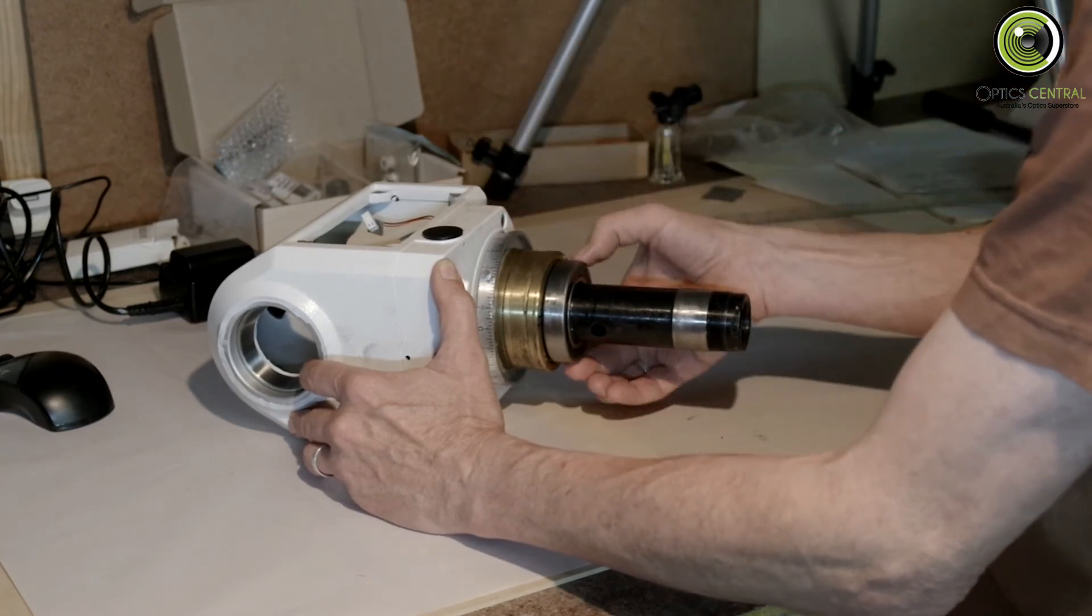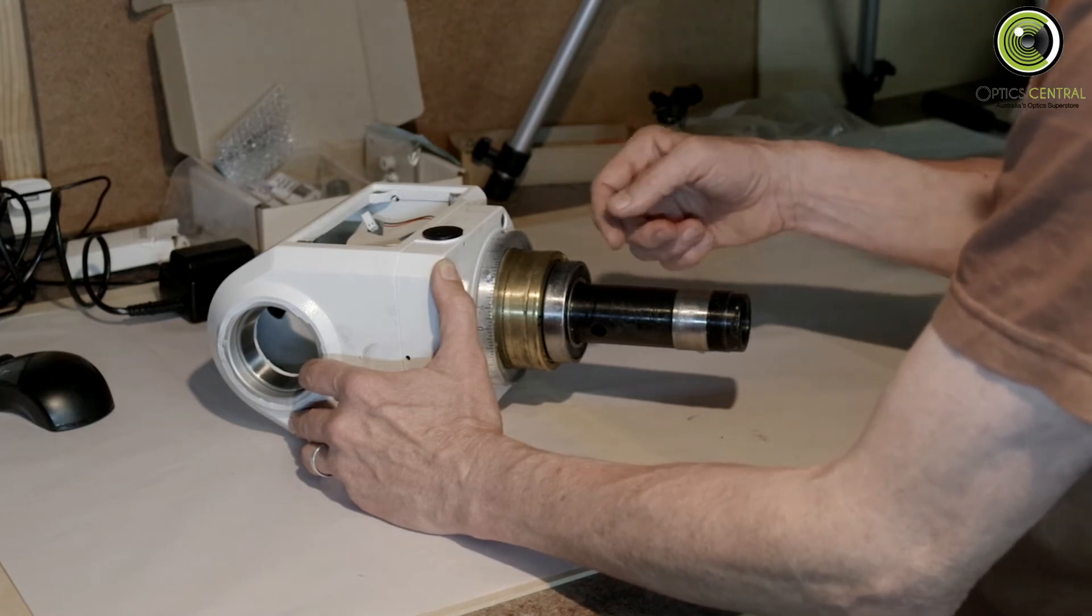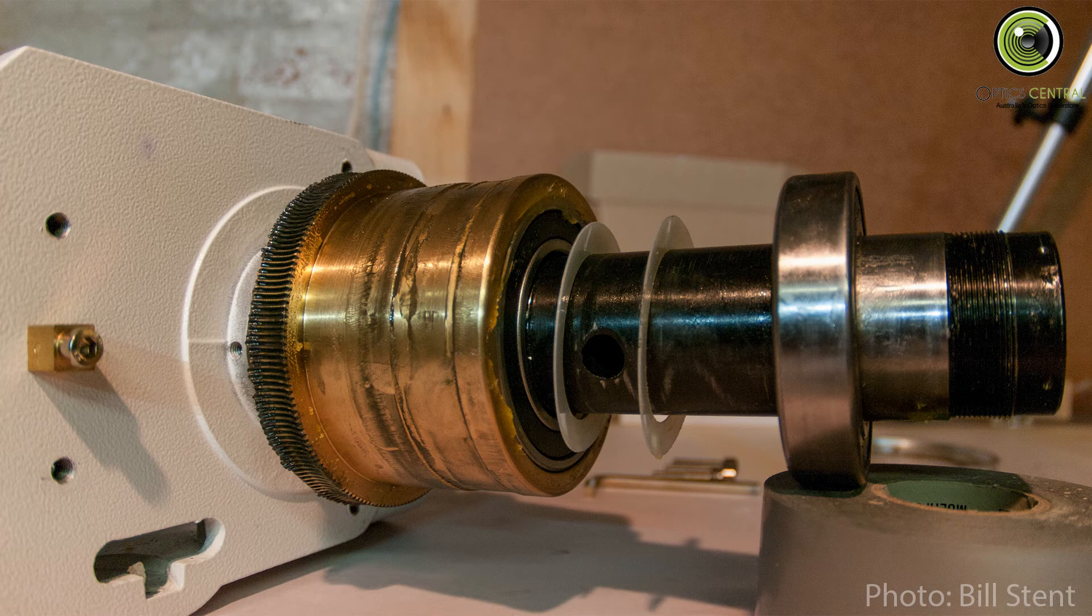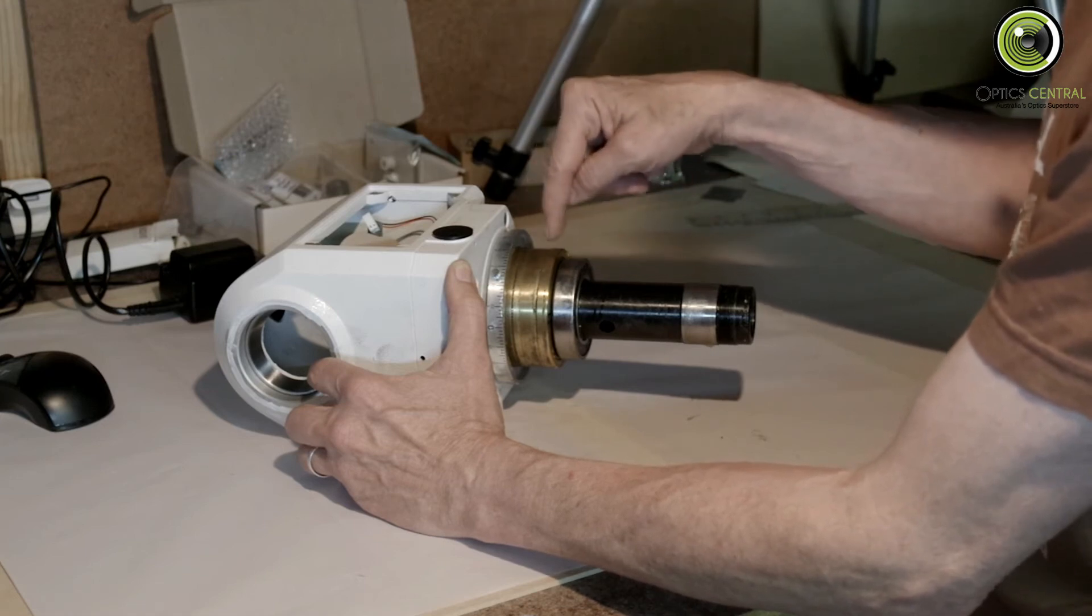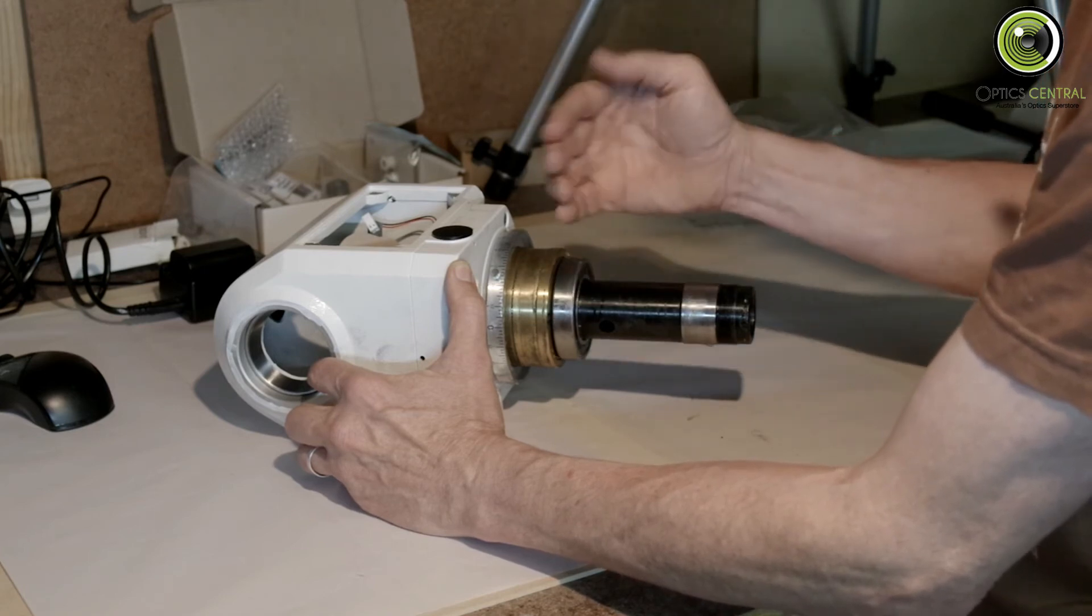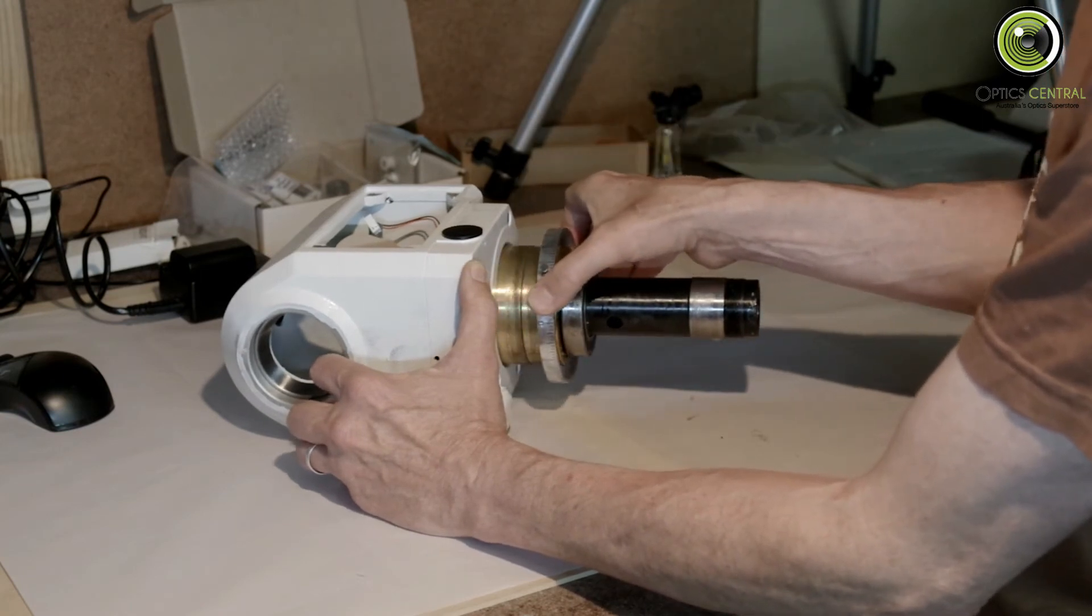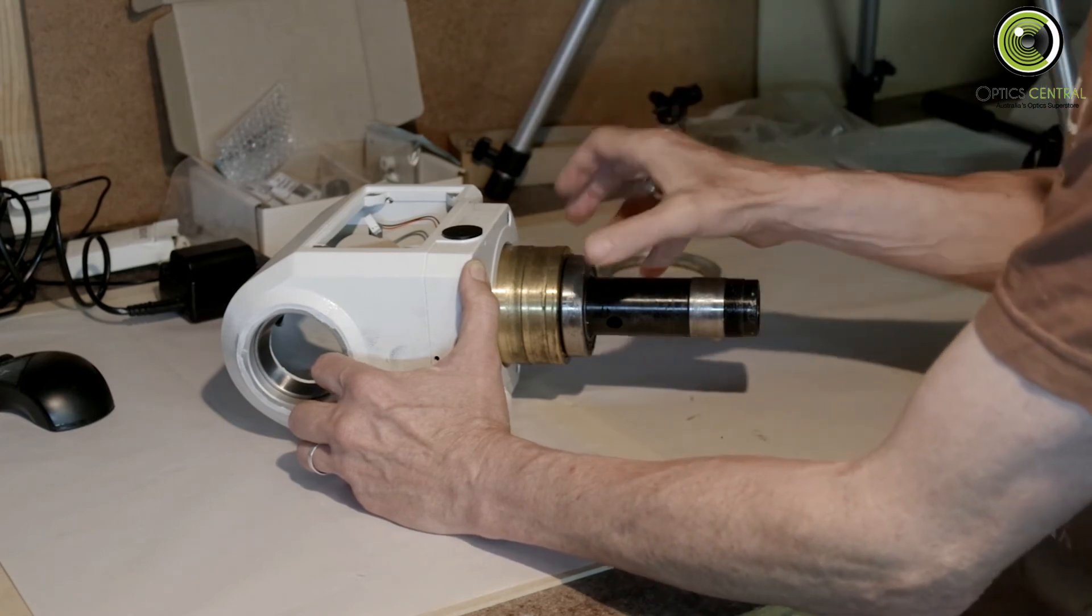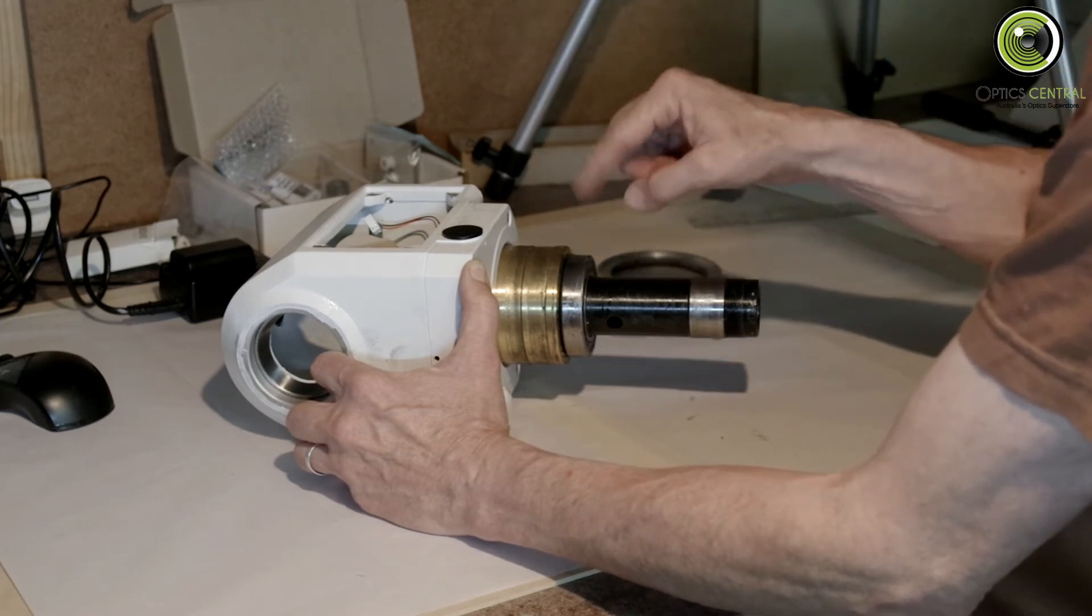You might have noticed that this bearing here had come down to around about there as I was taking it out of the lower housing. What we've got here is the brass wheel, and inside the brass wheel there's a bearing, and then there's a shim between these two bearings, and then there's this outer bearing here. The bearings are up against each other. I'm hoping that I might be able to leave this assembly together and not open it up, because these bearings are hard to move around.